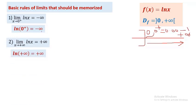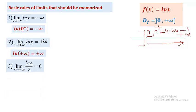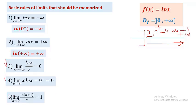Rule 2: the limit as x approaches +∞ of ln x equals +∞. This rule is abbreviated as ln(+∞) = +∞.